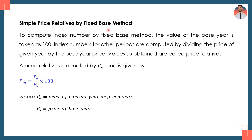Simple price relatives by fixed-base method: to compute index numbers by fixed-base method, the value of the base year is taken as 100. Index numbers for other periods are computed by dividing the price of the given year by the base year price. Yahan pe current year ki prices ko base year ki prices se divide karenge, aur base year ki value ko hum 100 choose karenge. These values so obtained are called price relatives.